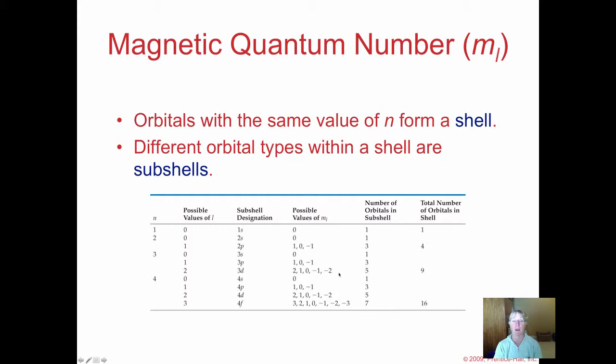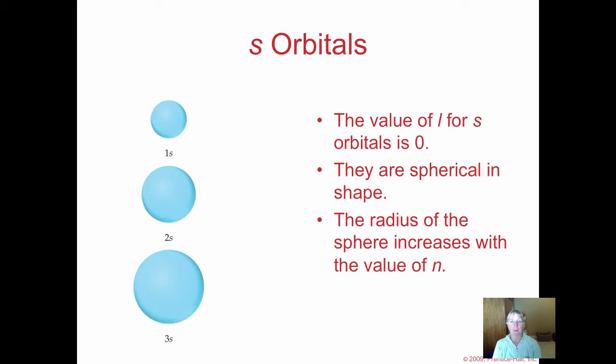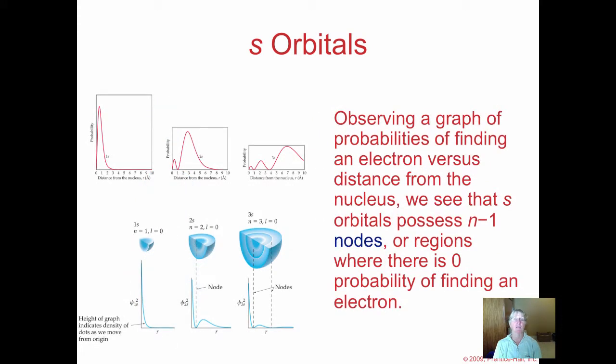Here is the spherical or s orbital. Every level has one; they just keep getting larger the farther you get from the nucleus.